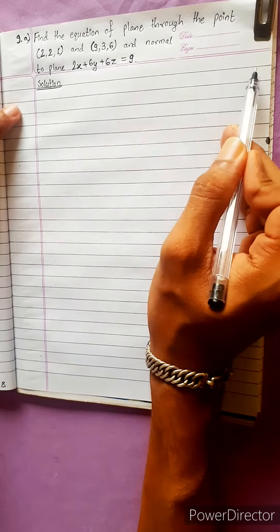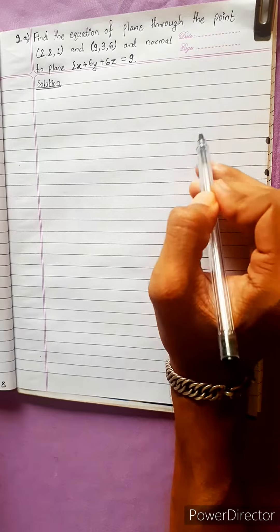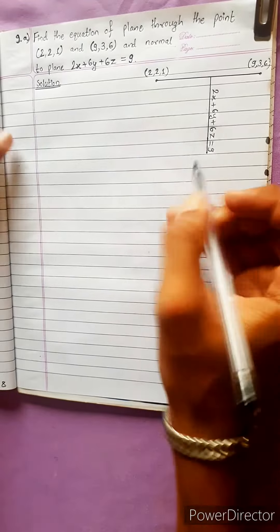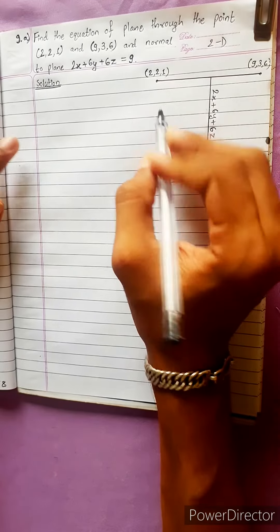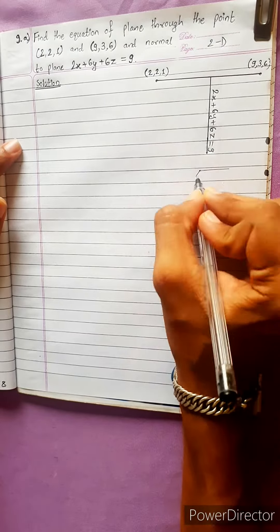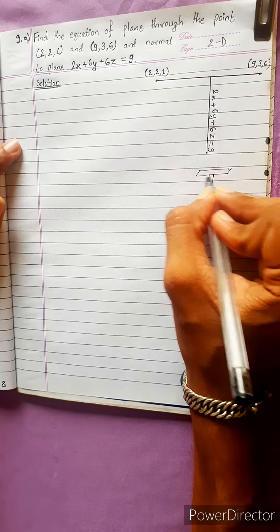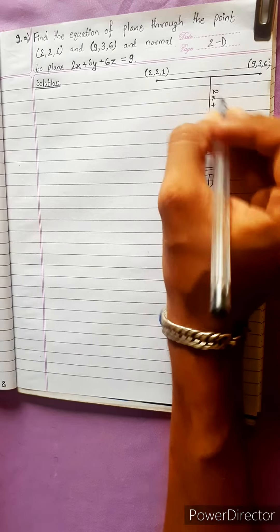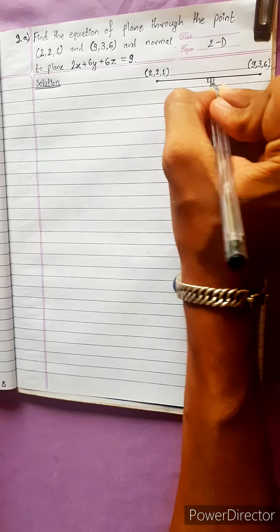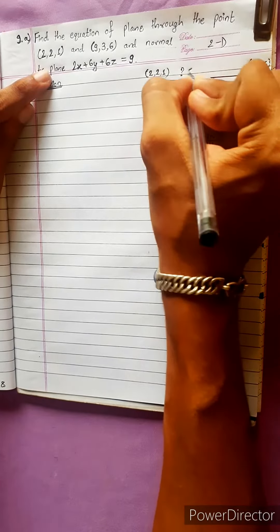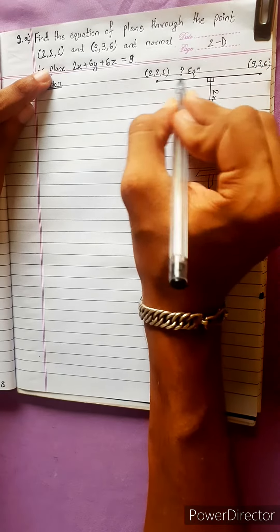Find the equation of plane through the point. Here is the equation of plane which is perpendicular to the plane. This is a 2-dimensional plane. We see the plane is perpendicular, normal to the plane. This is the equation of plane and we will check the equation.